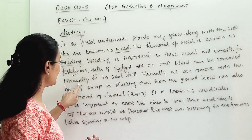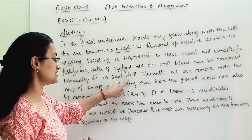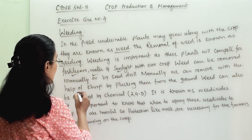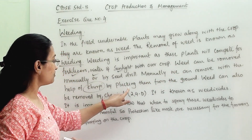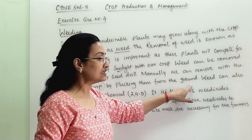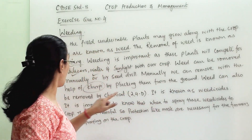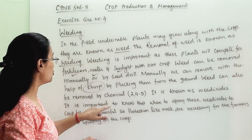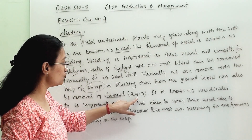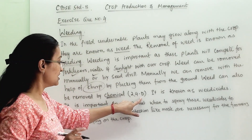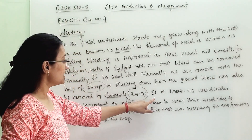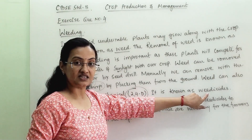Weeds can be removed manually or by chemical. Manually, we can remove them with the help of a khurpi by plucking them from the ground. Weeds can also be removed by a chemical — its name is 2,4-D, and it is a weedicide.